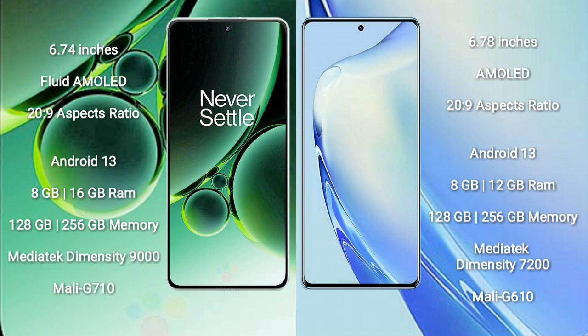Both OnePlus Nord 3 and Vivo V27 run on the Android 13 operating system. OnePlus Nord 3 comes with 8GB or 16GB RAM and 128GB or 256GB internal storage, powered by a MediaTek Dimensity 9000 processor with Mali-G710 GPU.